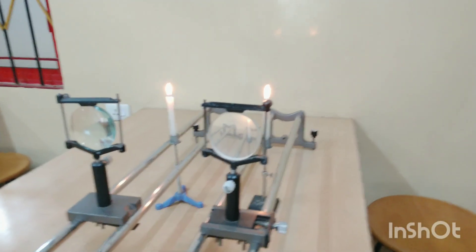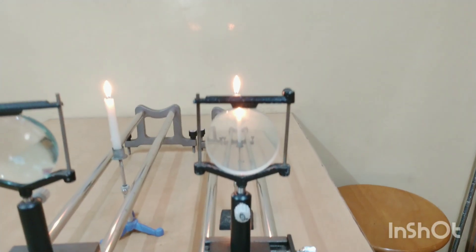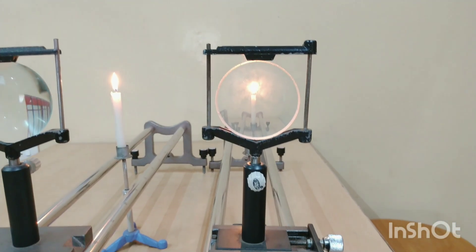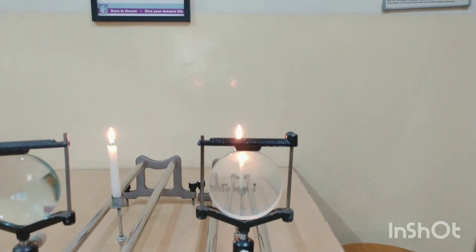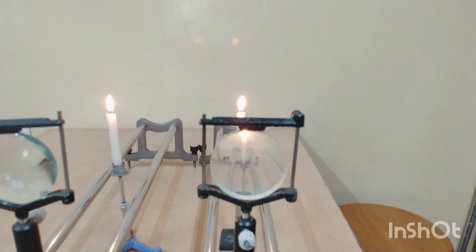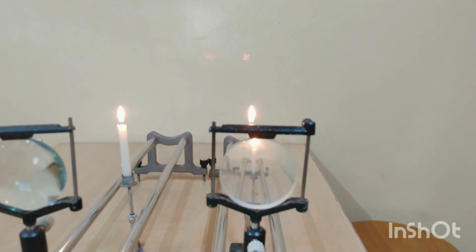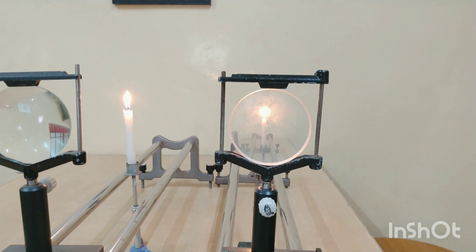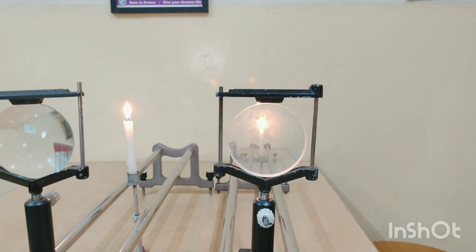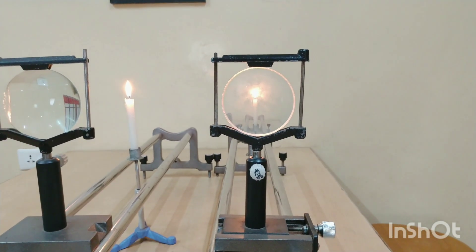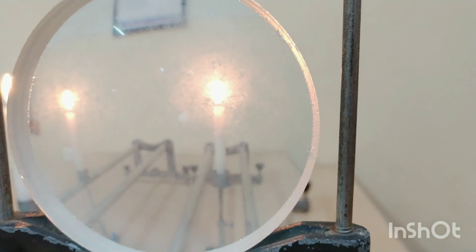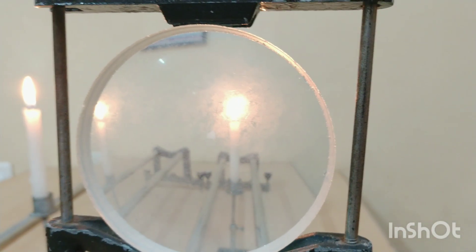When I look through this concave lens, I see that the image is now diminished. That is the actual size of the object, and you can see that the image is diminished and I see an upright image of the object. If I go even more closer, I can see the second candle where it is again diminished.